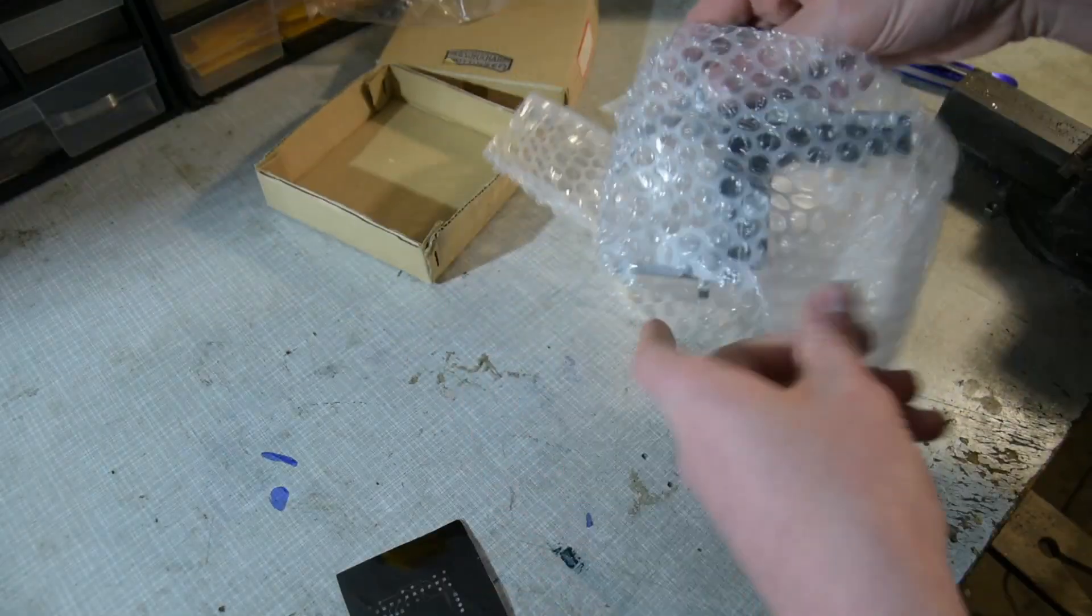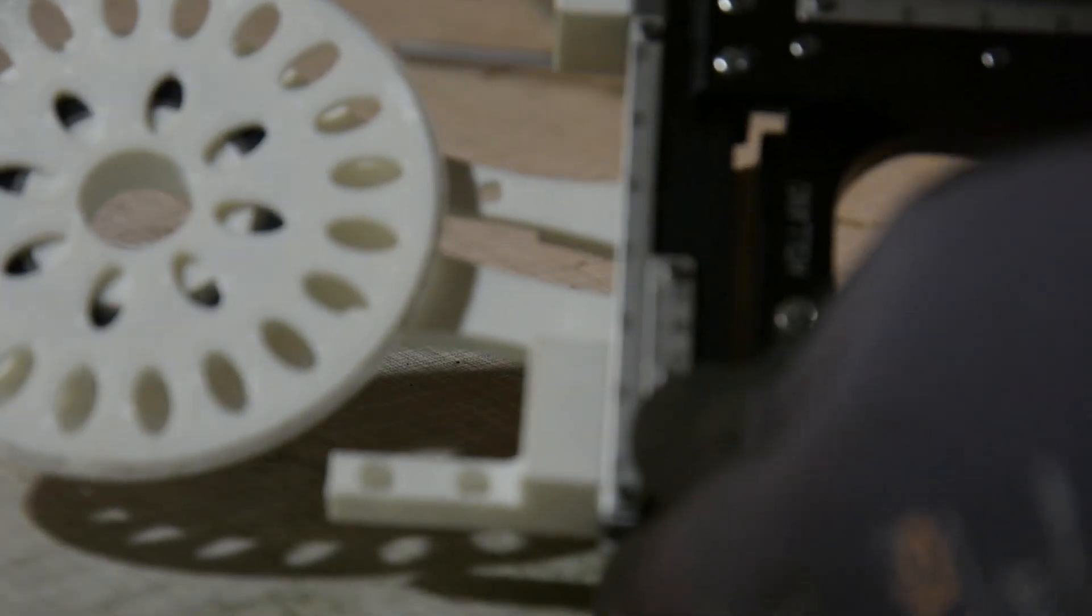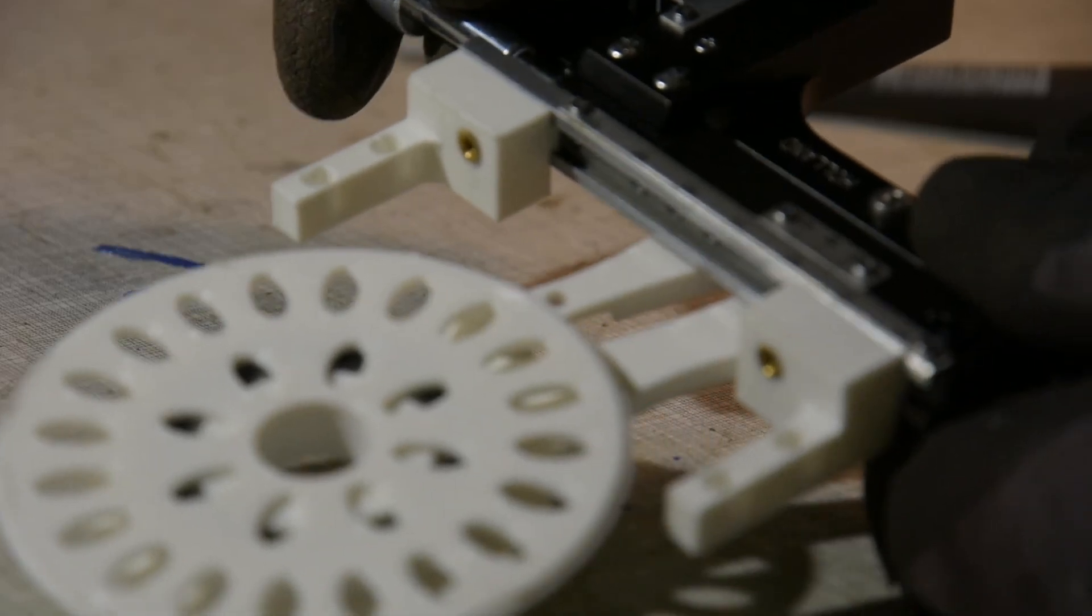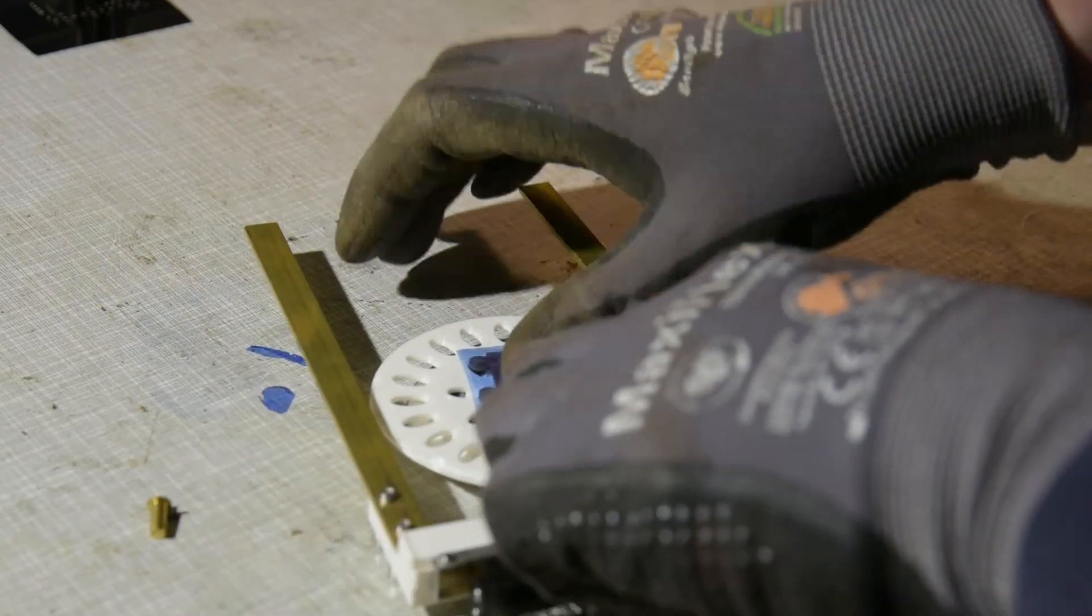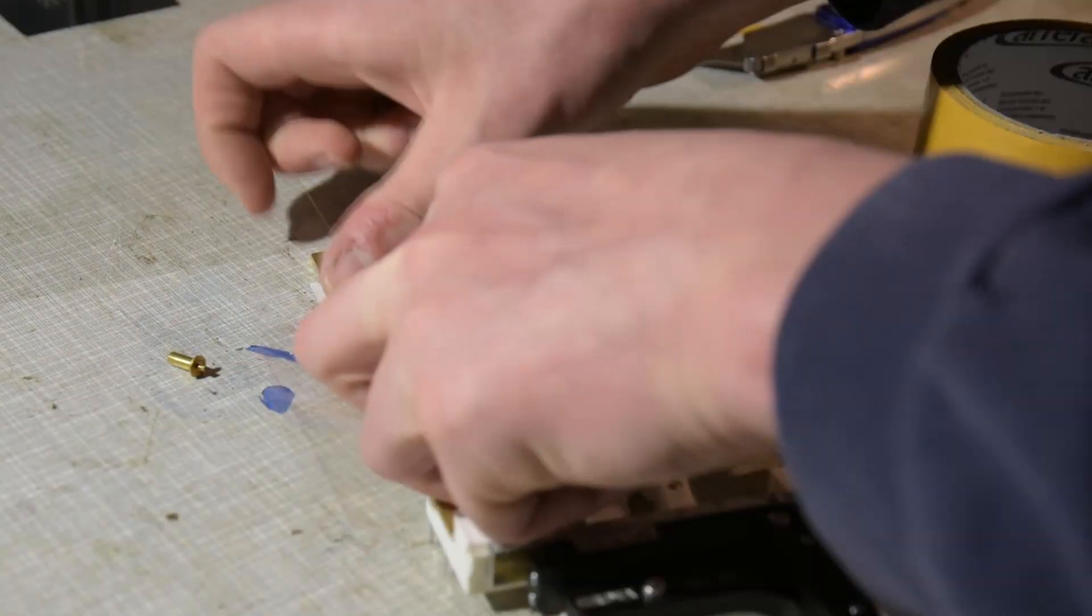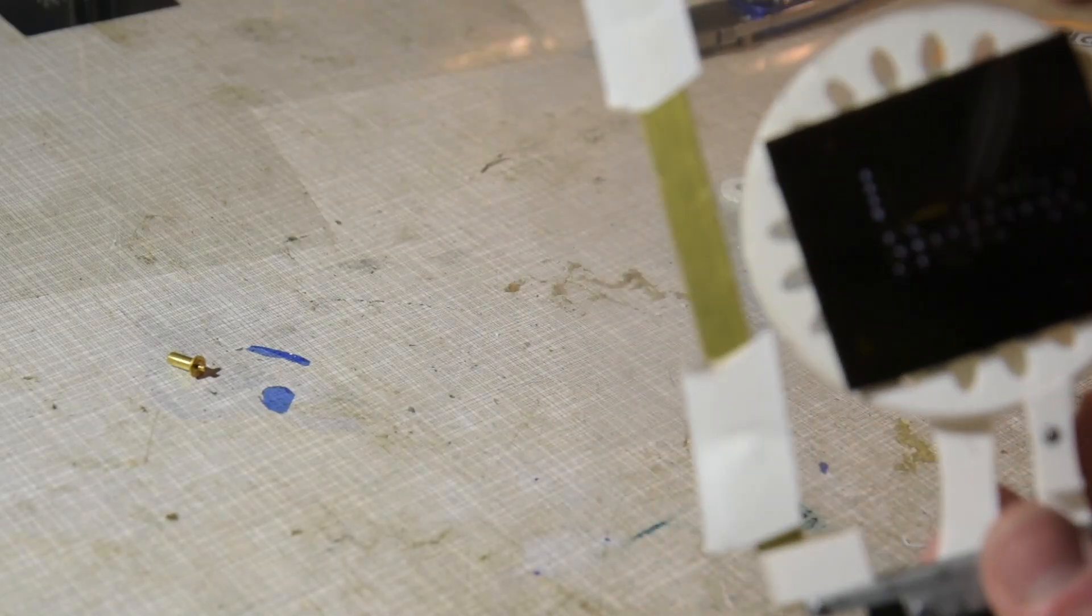For that I used an old XY table of a microscope and with the help of a few 3D printed parts I have a solution to this problem. Now I can tape the exposure mask to the XY axis and move it over the PCB and align it.